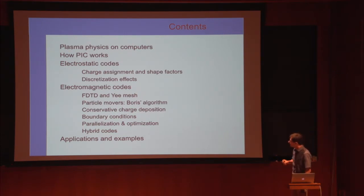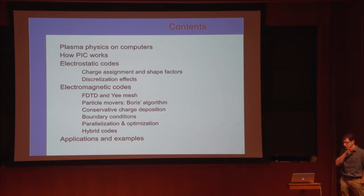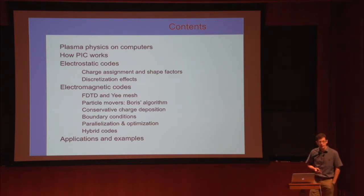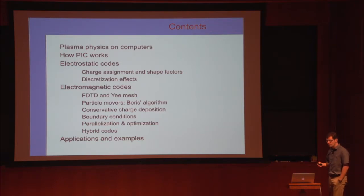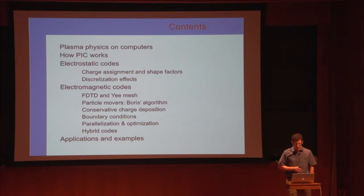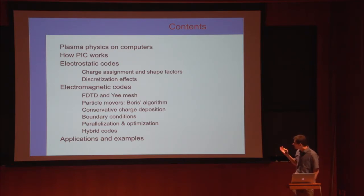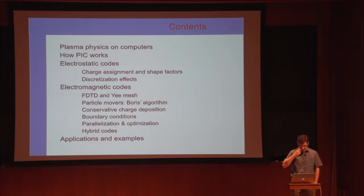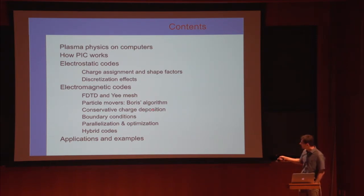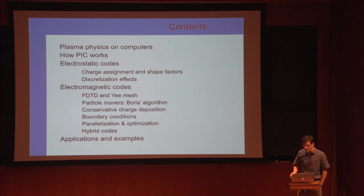A crucial piece is coupling particles back to the grid. Getting information from the grid was just interpolating electric and magnetic fields to the particle locations. But to advance electromagnetic fields, you need to deposit particle charge and current back onto the grid. We discussed several ways of depositing using first-order, second-order, or higher shape-order functions, and one important topic was conservative charge deposition. Today I'll finish details on that, discuss boundary conditions, running on large machines, hybrid simulations, and then switch to astrophysics applications.